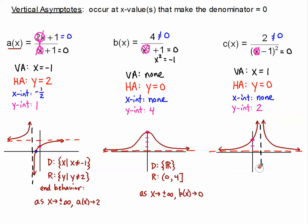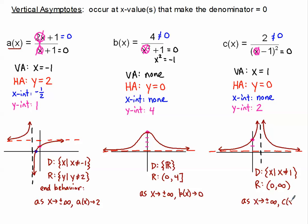Let's do domain, range, and end behavior for c of x. The domain is everything except 1, so x cannot equal 1. The range is everything positive: we can't equal 0 and we have no negative values, so we go from 0 to infinity. End behavior is the same as before — c of x approaches the value of 0 on both the far right and far left ends. Thanks for watching — I want you to be able to find vertical asymptotes, x-intercepts, and y-intercepts from this tutorial.